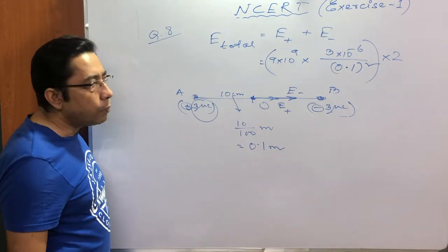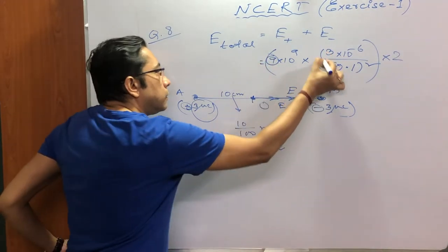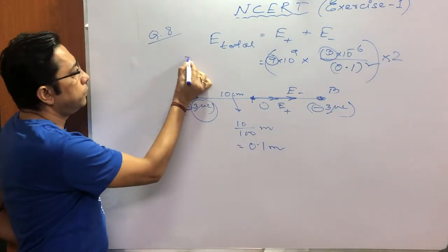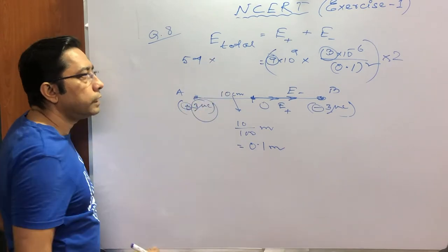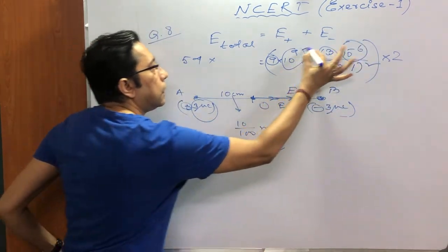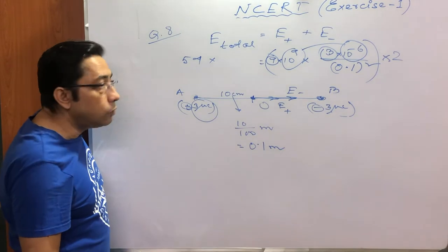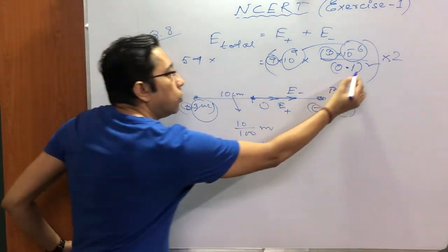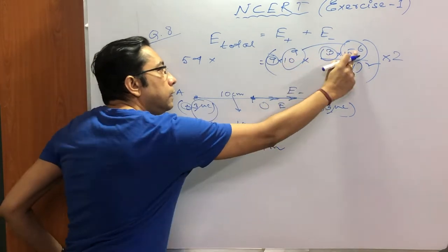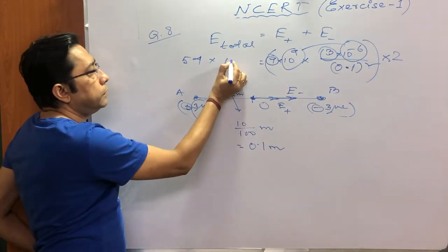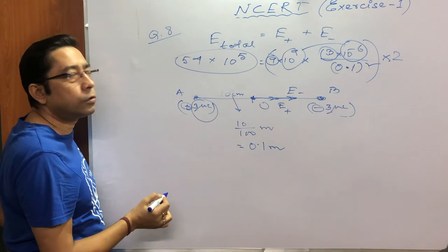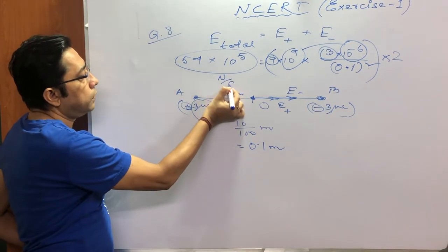So total electric field would be this plus the same value repeated, that means into 2. This is the answer. How much would it be? Think of the digits: 9, 3, 27 into 2, 54. So it would be 54 into, then look at the powers of 10: 10 to the power 9, 10 to the power minus 6, how much remains? 10 to the power plus 3. And then 0.1 whole square is 1 by 100, so that jumps up and adds to 10 to the power 3. That means 10 to the power plus 5. So this much would be the total electric field: 54 into 10 to the power plus 5, unit Newton per Coulomb.